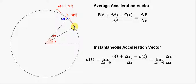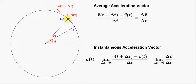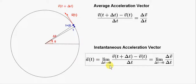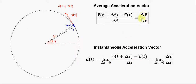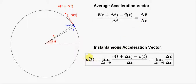To get the acceleration of the object at time t, we have to imagine letting the time interval delta t approach zero. So we can imagine that these two points are very close together. We let the time interval approach zero, so the average acceleration delta v over delta t will approach the instantaneous acceleration vector at time t — the acceleration of the object when it's here.